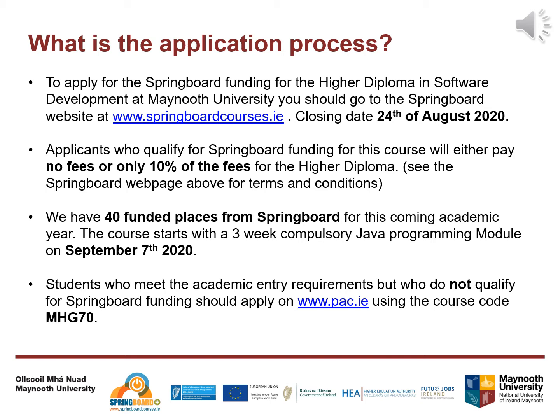The course starts with a three-week compulsory Java programming module on September 7th, 2020. This three-week module is worth one-sixth of the overall Diploma and sets the foundation for the whole course. It's a nine-to-five course and it's essential that you work and engage fully for those three weeks. Previous years we had people try to miss a couple of days and it undermined their whole Diploma. You also need to work at night time and over the weekends to get off to a good start.